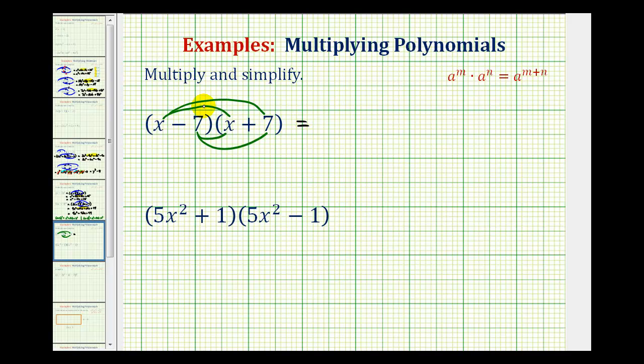So the first product would be x times x, that's x squared. Next we'd have x times seven, that's going to be plus seven x. Next we have negative seven times x, that'll be minus seven x. And then we have negative seven times positive seven, that's going to be minus forty-nine.